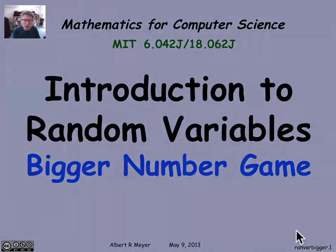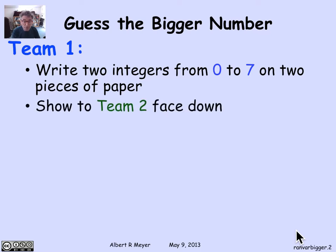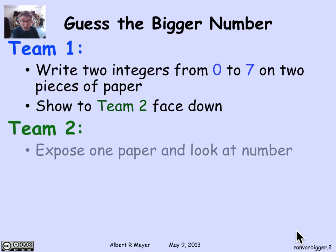We're going to play the bigger number game. There are two teams. Team 1 has the task of picking two different integers between 0 and 7, inclusive. They write one integer on one piece of paper and the other integer on the other piece of paper. They turn the two pieces of paper face down so the numbers are not visible. The other team then sees these two pieces of paper with different numbers written on them sitting on the table.